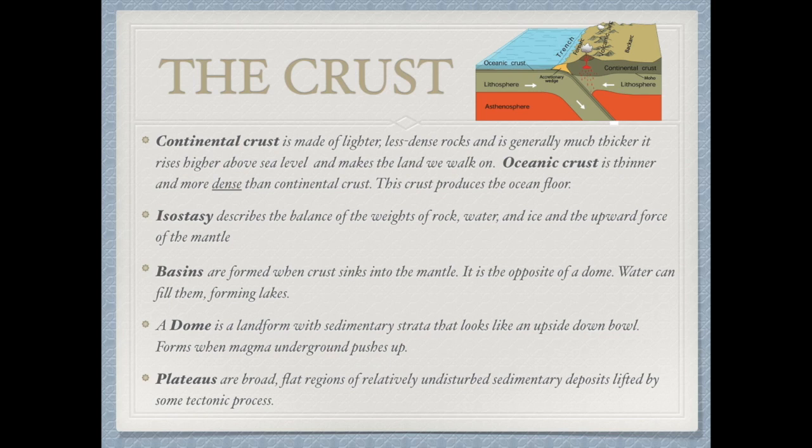Isostasy — iso meaning balance — refers to the balance of the weight of rock, water, and ice against the upward force of the mantle. There are three landform terms to know: basins, domes, and plateaus.